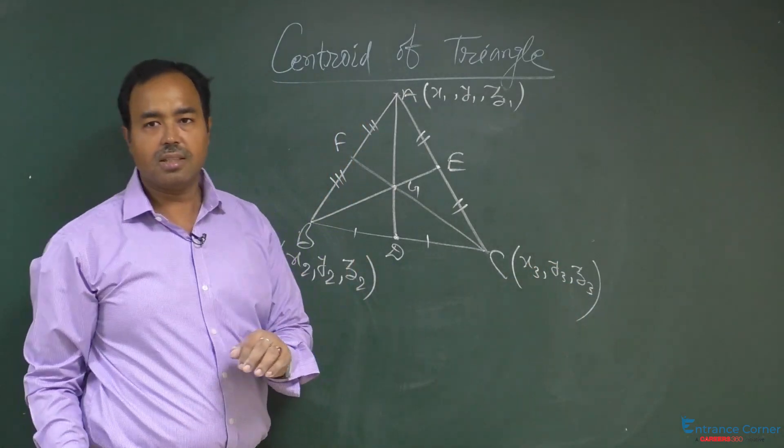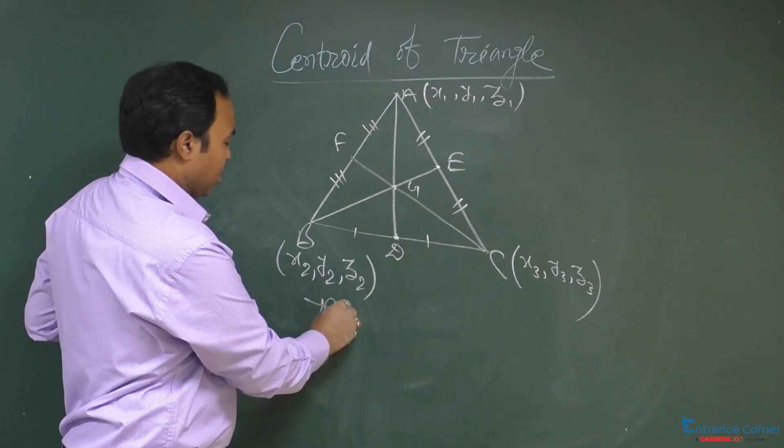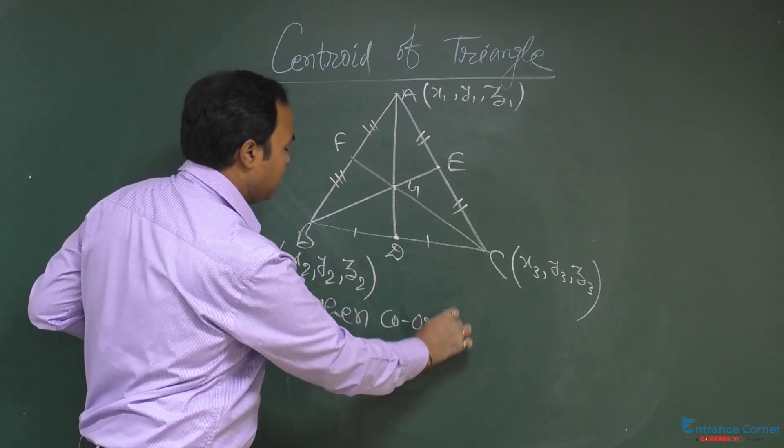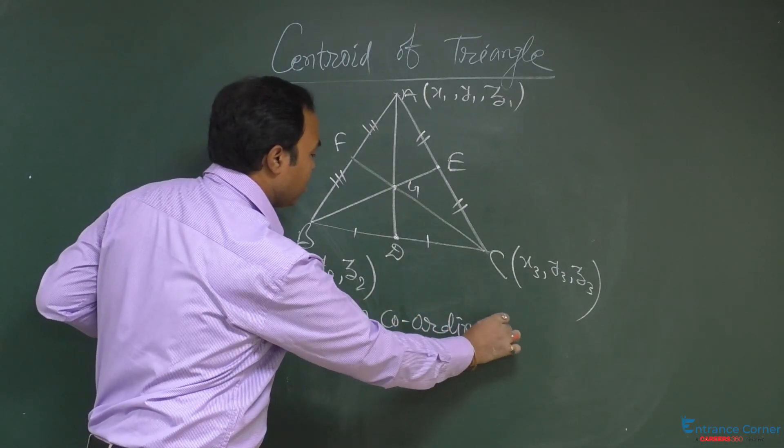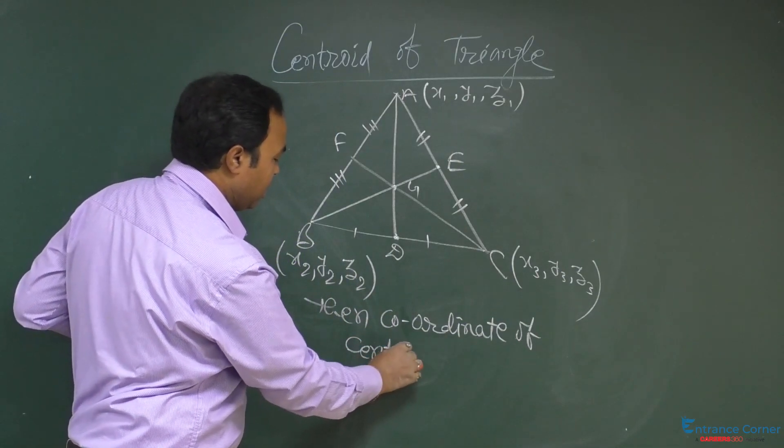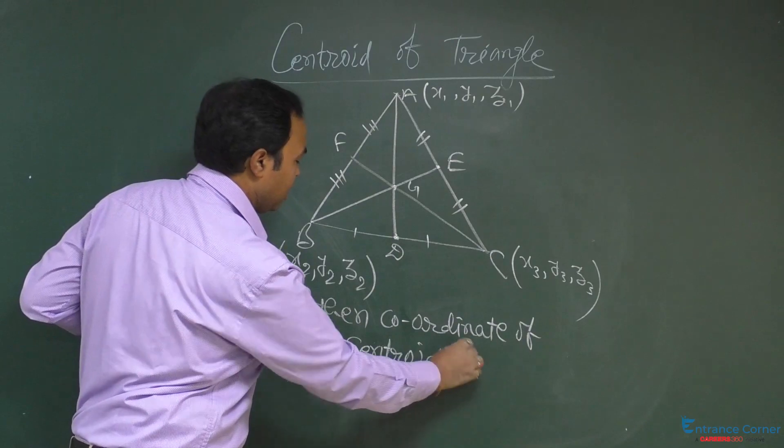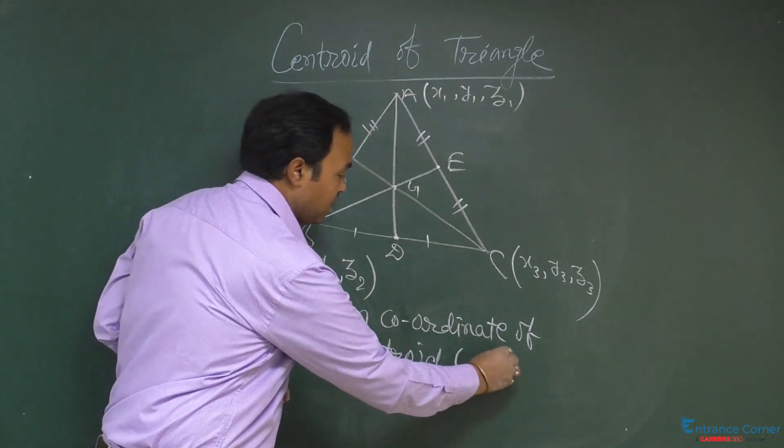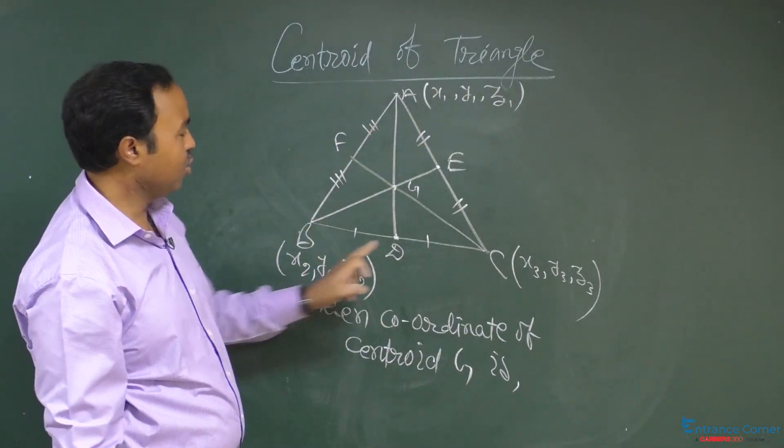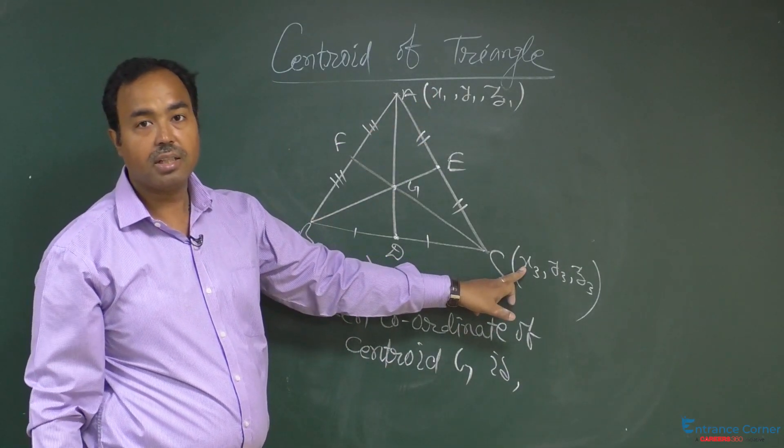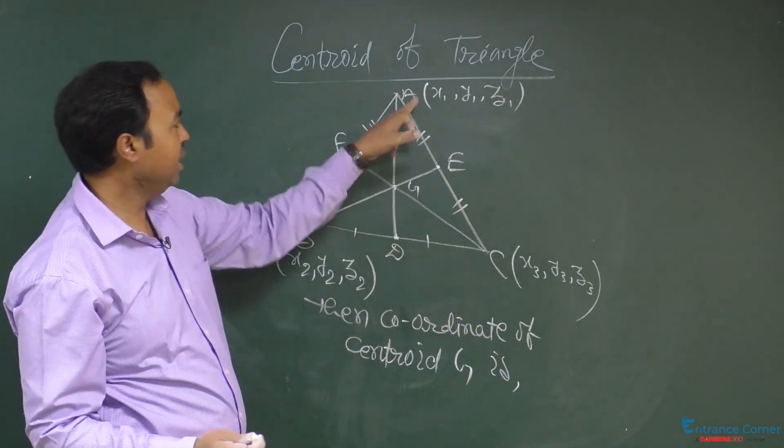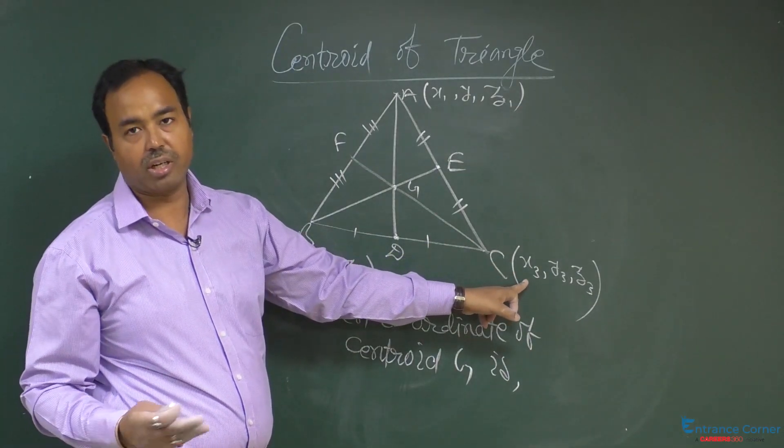Then in that case, coordinate of centroid G is, this is x1 plus x2 plus x3 divided by 3. That means, it is a simple average, average of these three points, you can remember.